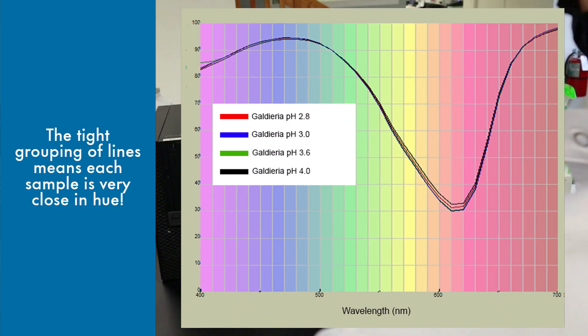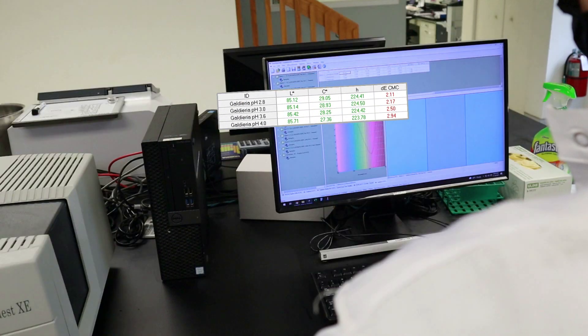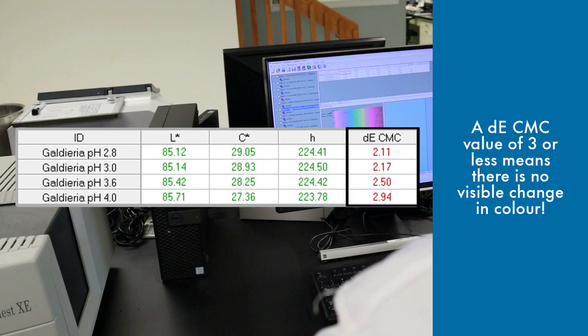As you can see, Galdaria was stable down to pH 2.8, making it a great option for natural blues in acidic applications like beverages and confections.